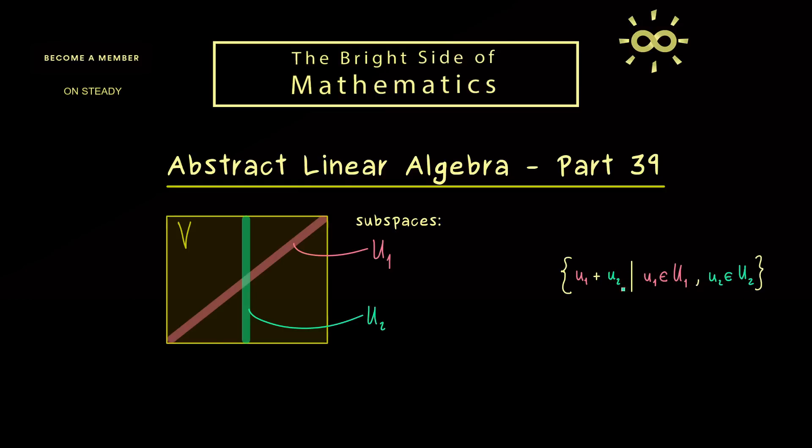This is all because we already know that U₁ and U₂ form subspaces already. So for example, if we want to scale the second part here, it's already included in the second subspace. Therefore it's also clear that this new set is also a subspace in V.